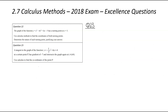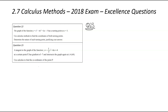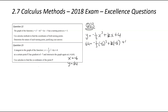We are now looking at question number 23. We've got a tangent of this particular function, and the annoying part is the k in the function. At a certain point it has a gradient of negative 7. Find the intersects of the graph again at (negative 6, 64). Use calculus to find the coordinates of that point P. The first thing I know is that (negative 6, 64) intersects the graph — so that's an exact coordinate of the original function, meaning we can find k.